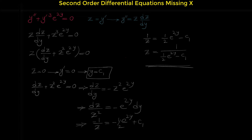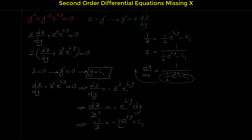Now that we have z, remember z is actually y prime, and we are looking to find y. So let's replace z with y prime. Note that y prime is actually dy over dx. So dy over dx equals 1 over the quantity one-half e to the 2y minus c₁. If we do a cross multiplication, we can write this in the form: one-half e to the 2y minus c₁ dy equals dx. We now have again a separable differential equation with y on the left and x on the right.